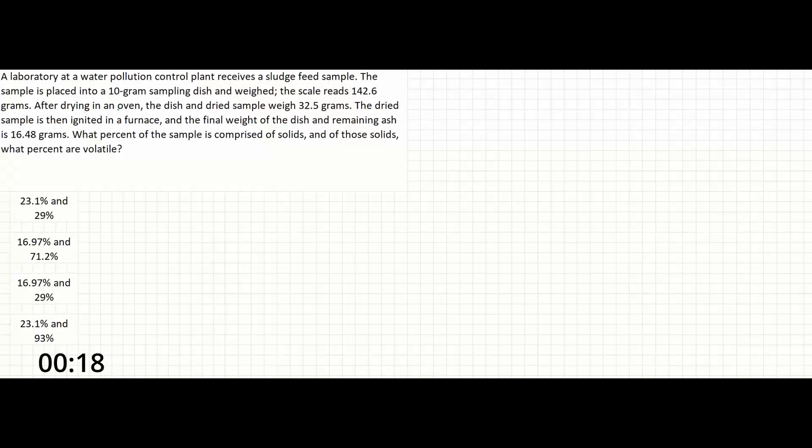After drying in an oven, the dish and dried sample weigh 32.5 grams. The dried sample is then ignited in a furnace, and the final weight of the dish and remaining ash is 16.48 grams.